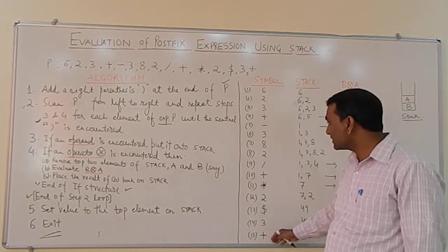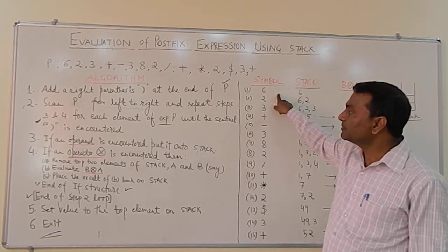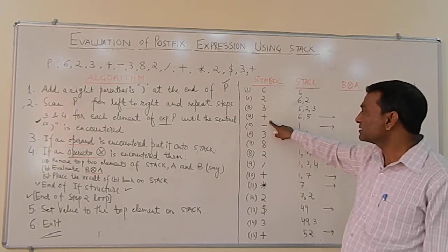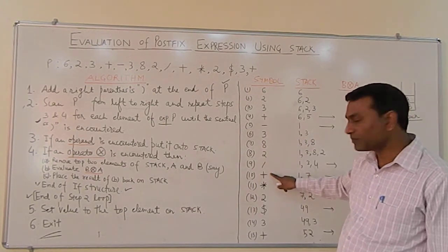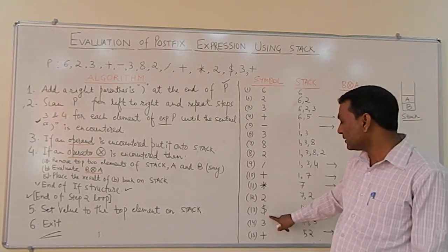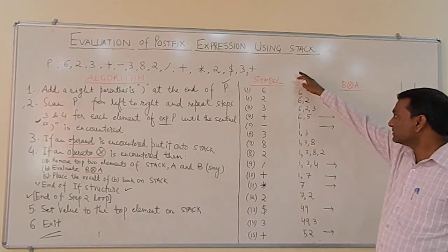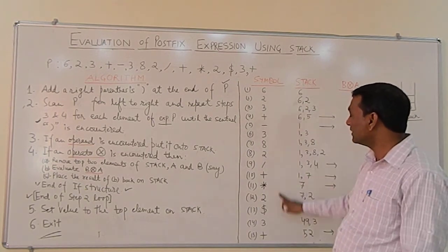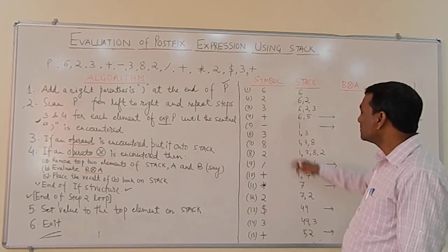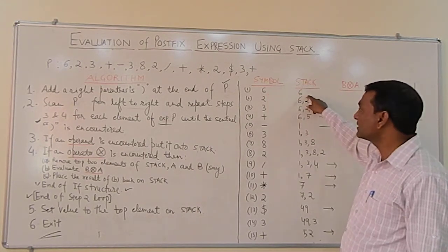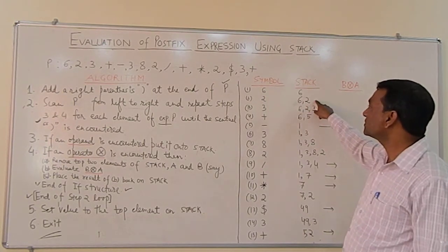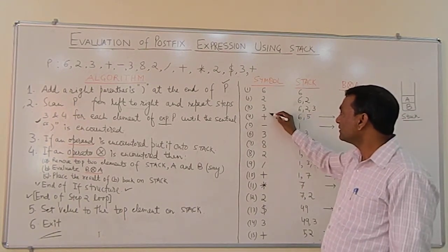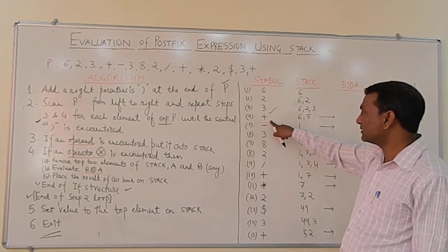There are 15 elements in total. The first column is the scanned symbol — we scan the symbols one by one: 6, 2, 3, plus, minus, 3, 8, 2, divided by, plus, multiply, 2, dollar, 3, and then plus. The second column is the stack. Since 6, 2, and 3 are operands, they are directly pushed onto the stack, giving us 6, 2, 3. Then we get the operator plus.